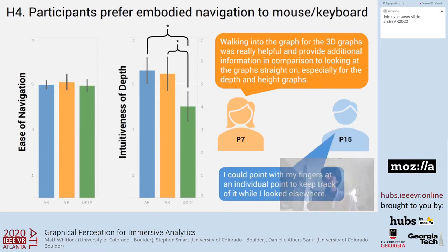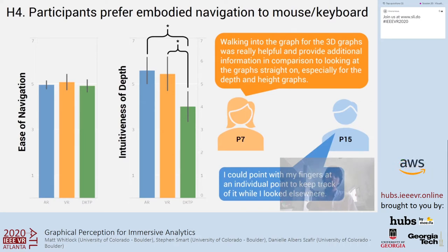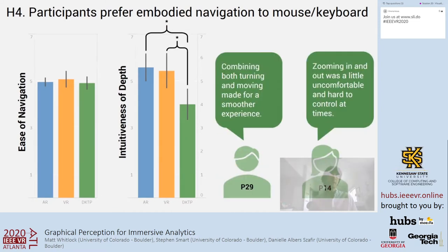We saw only a little evidence toward preference for embodied navigation, with participants reporting higher scores for the intuitiveness of inferring depth in AR and VR than on the desktop, despite no significant difference in ease of navigation. In open feedback, participants described walking into the graphs and being able to point with their fingers as helpful techniques for VR and AR navigation. Most participants responded positively to the desktop navigation interface, though some pointed out tasks that were particularly challenging with the mouse and keyboard interface.